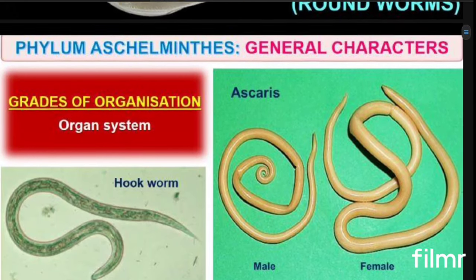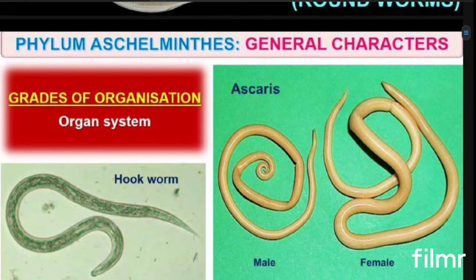If you are going for the general characteristics, all these worms are actually round in their cross-sectional structure. That means if you take the cross-section, you can see that there will be a round-like structure, so that's why they are known as roundworms. They are following an organ system level of organization.